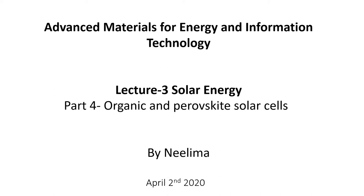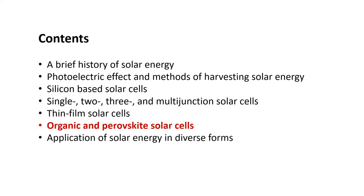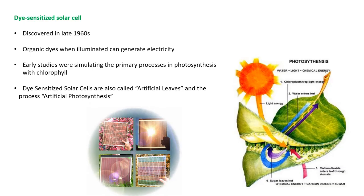In this lecture we shall study about organic and perovskyte solar cells. First in the list is the dye-synthesized solar cells. These were discovered in the late 1960s. Some organic dyes when illuminated can generate electricity at oxide electrodes in electrochemical cells. Early studies were a biomimetic or bionic approach, simulating the primary processes in photosynthesis with chlorophyll extracted from spinach. Therefore, dye-synthesized solar cells are also called artificial leaves and the process artificial photosynthesis.